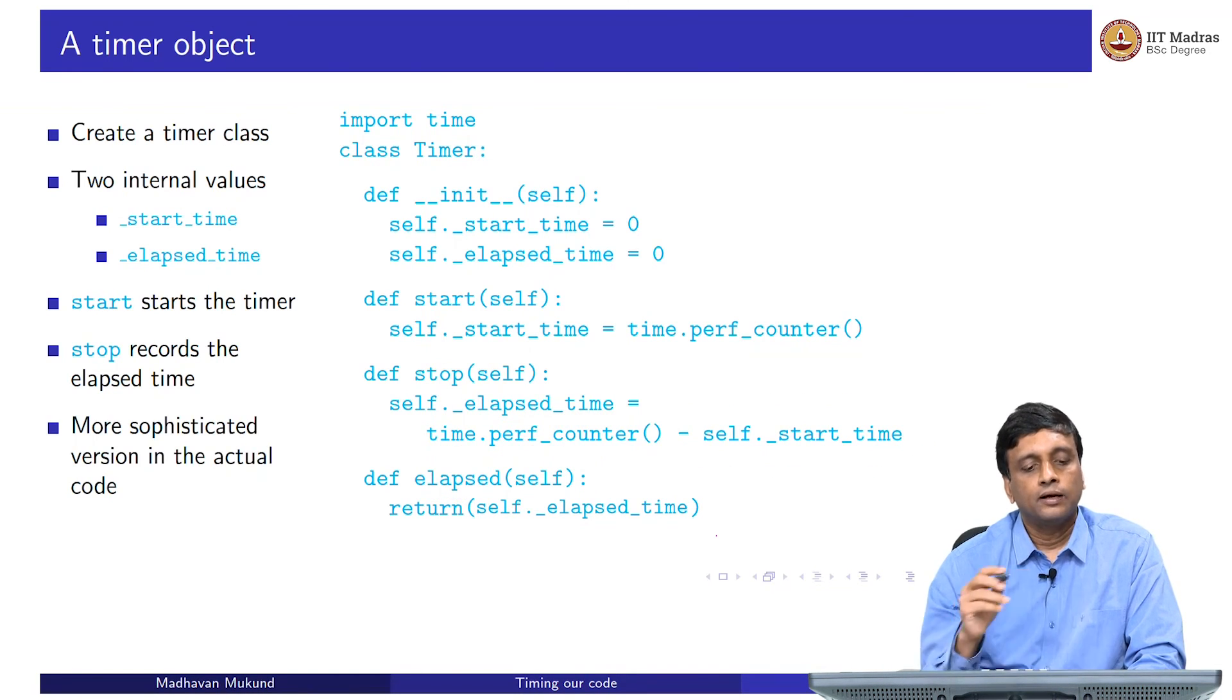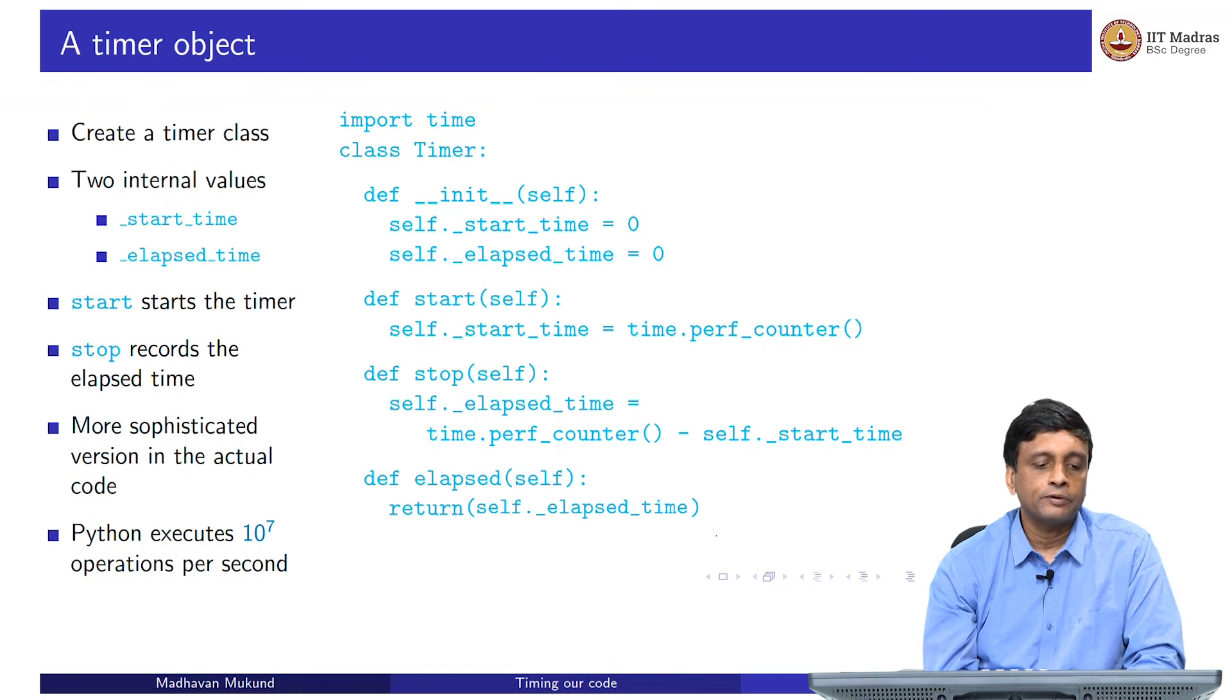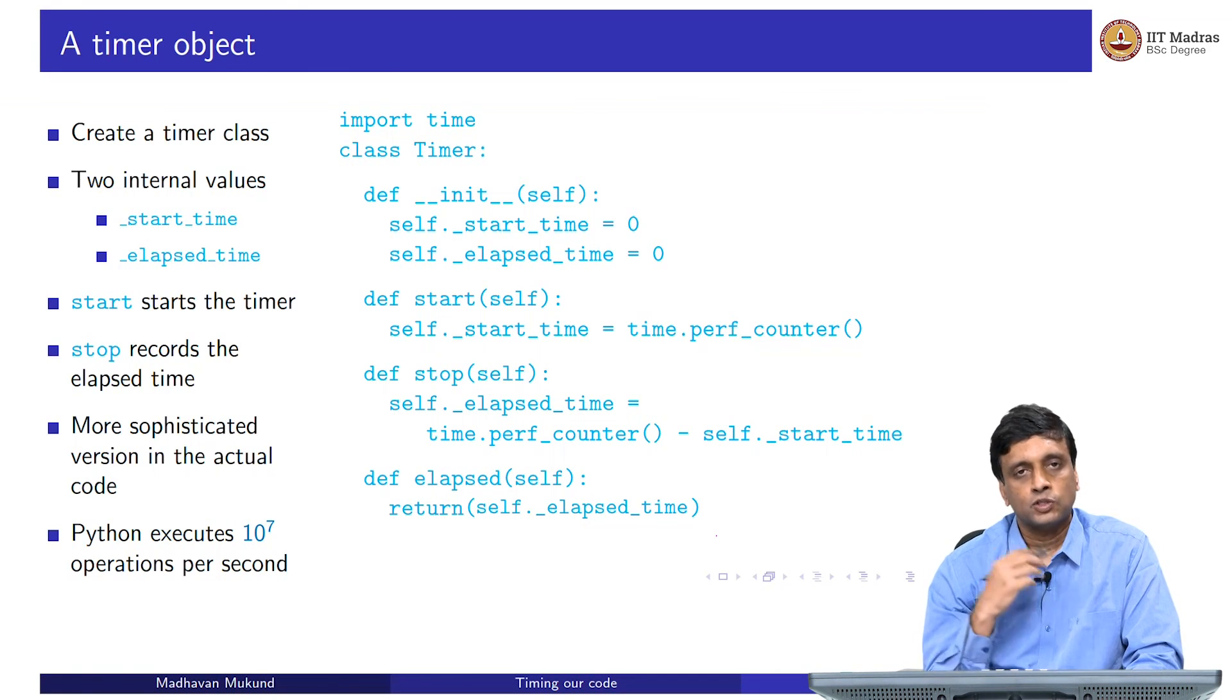With this, we can actually measure the time that Python takes to run. And it will turn out that Python actually executes something like 10 to the power 7 operations in a second. This is considerably slower than languages like C++ and C, which usually do 10 to the 8 or more. So, Python is at least a factor of 10 slower than other languages. Sometimes it matters, sometimes it does not matter. But this 10 to the 7 is useful just to calibrate for ourselves, how long things are going to take and to understand why things need to be done more efficiently in certain cases.